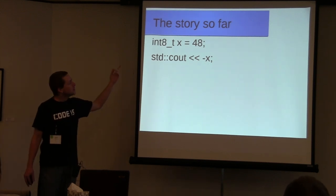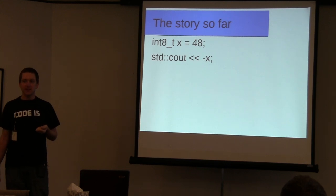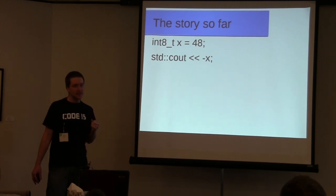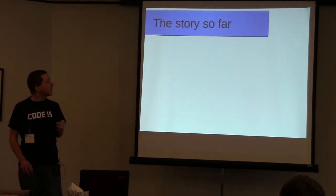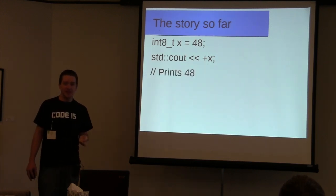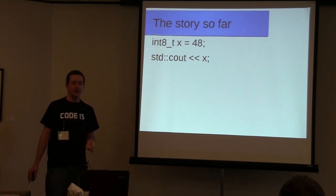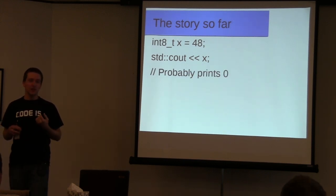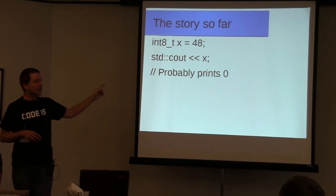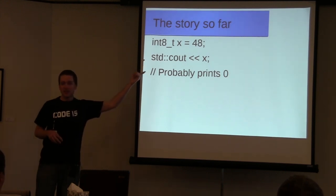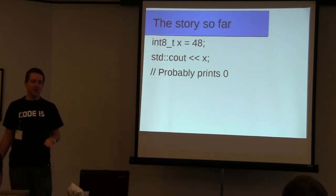Going more into the types in the header <cstdint>, added in C++11: int8_t is a type that's exactly 8 bits if it exists. If we set it to 48 and print the negative value, it prints -48 as expected. If we print the positive value, it prints 48 as expected. But if we just try to print the value directly, on most systems it'll actually print '0', because the ASCII value of '0' is 48, and int8_t is typically just a typedef for signed char. When passed to std::cout it's interpreted as a character, because a typedef does not create a new type.